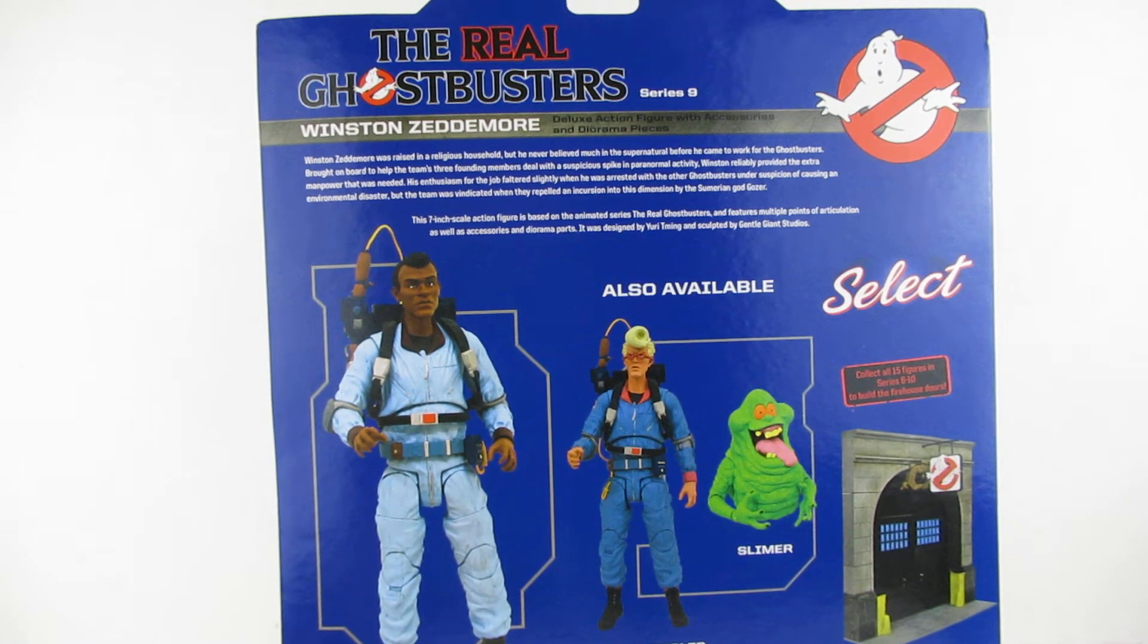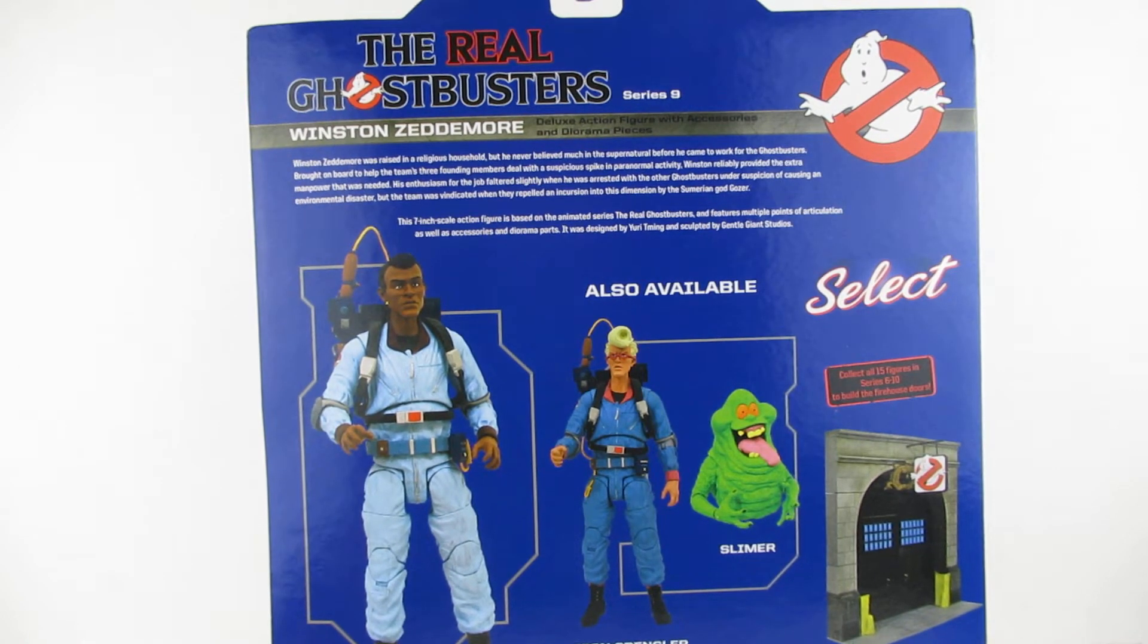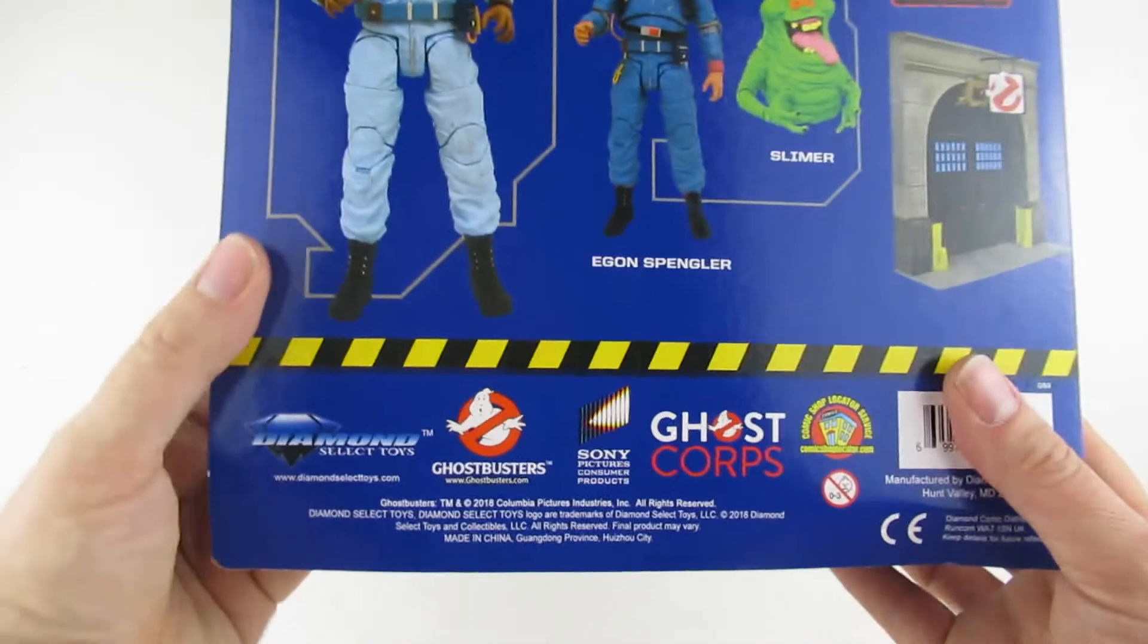This seven inch action figure is based on the animated series the Real Ghostbusters and features multiple points of articulation as well as accessories and a diorama piece. It was designed by Yuri Taming and sculpted by Gentle Giant Studios.